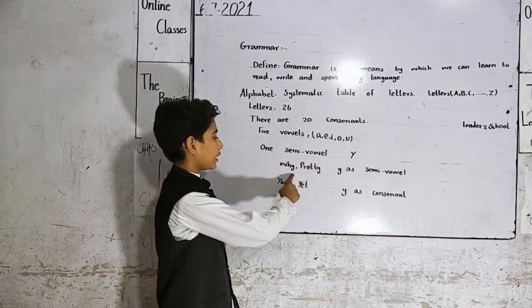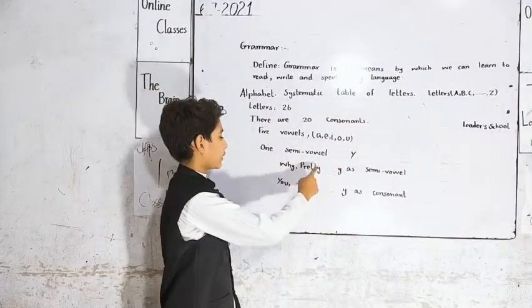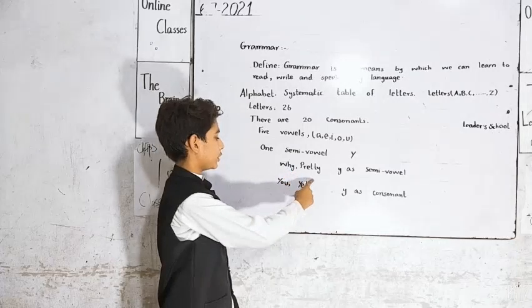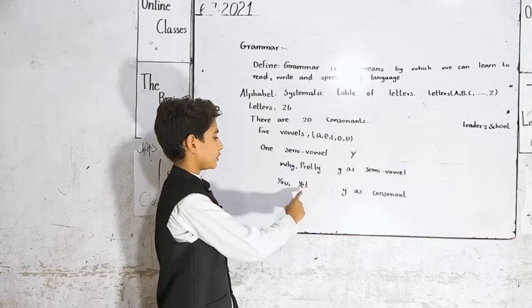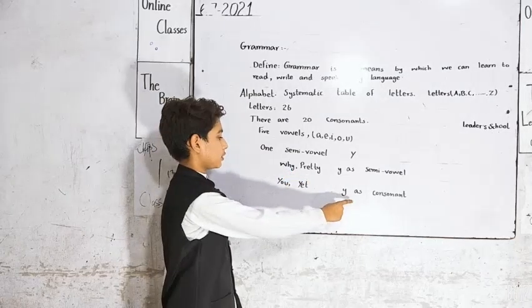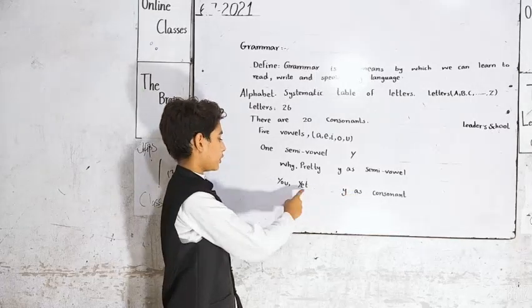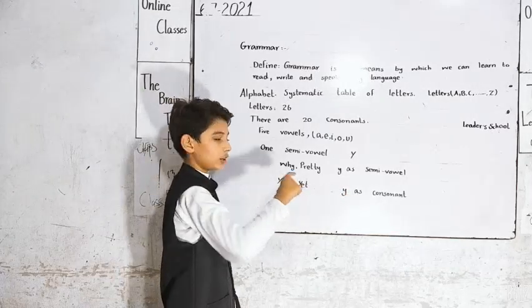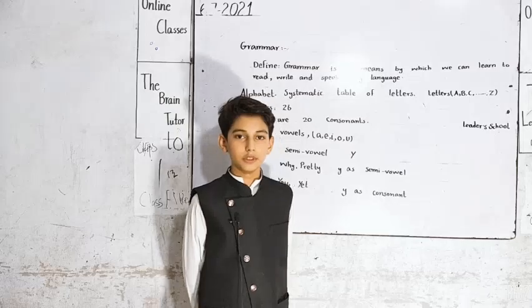If Y comes at the end then it is a semi-vowel, for example in the word 'pretty'. If Y comes at the first then it is known as a consonant, for example 'yellow'. Allah Hafiz.